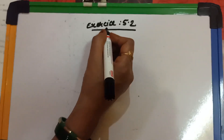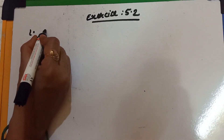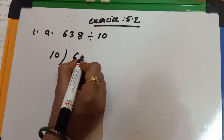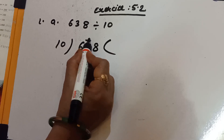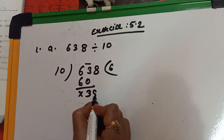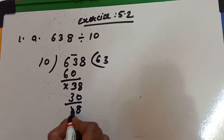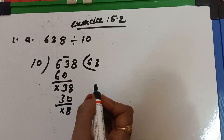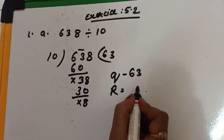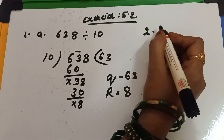In Exercise 5.2, find the quotient and remainder. From question 1, I am taking question (a): 638 divided by 10. So 10 into 638 — 10 sixes are 60; 3 minus 6 is 0; bring down 8; 10 threes are 30; 8 minus 0 is 8; 3 minus 3 is 0. So the quotient is 63 and the remainder is 8.